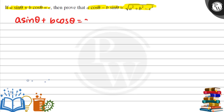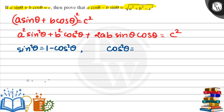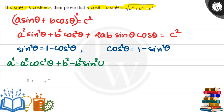So here we can see that a sinθ + b cosθ is equal to c. Now we know two formulas: sin²θ = 1 - cos²θ and cos²θ = 1 - sin²θ. So now we can expand: a² times (1 - cos²θ) is a² minus a² cos²θ, plus b² minus b² sin²θ, plus 2ab sinθ cosθ.